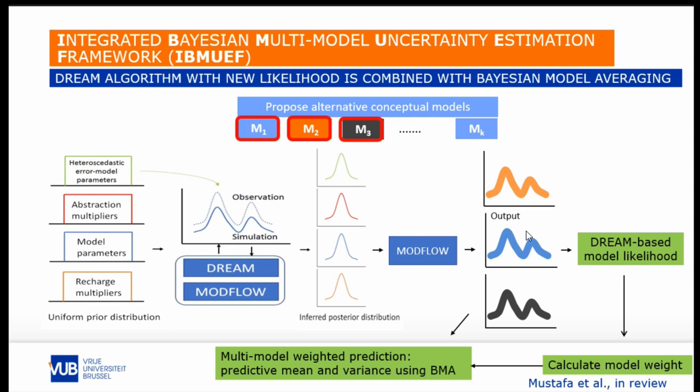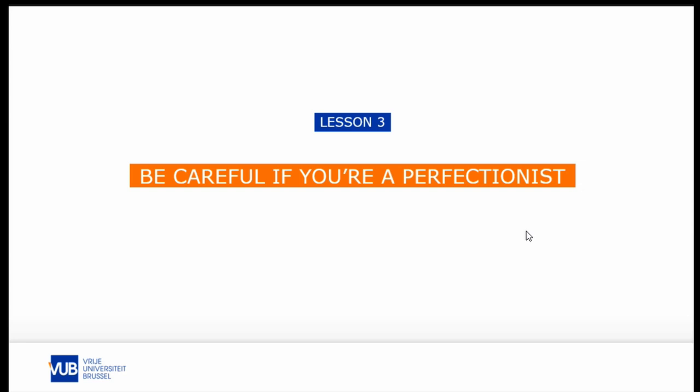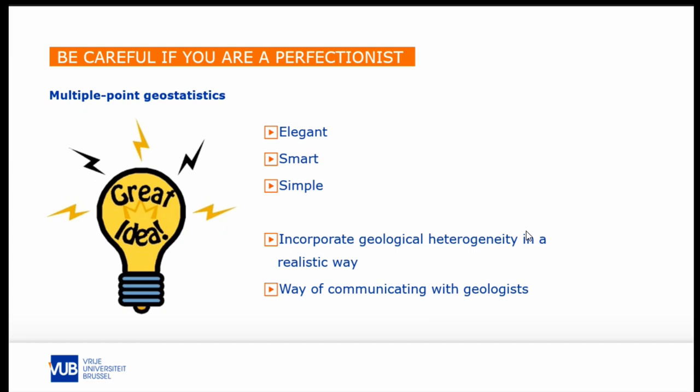So far, we know that heterogeneity matters, and there are plenty of tools available to deal with it. Let's move to the next lesson, which probably needs a bit more explanation. Lesson three: be careful if you're a perfectionist.